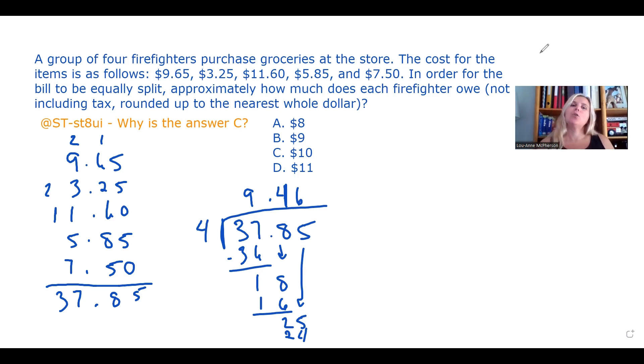And that question is this: A group of four firefighters purchase groceries at the store. The cost for the items is as follows: $9.65, $3.25, $11.60, $5.85, and $7.50.